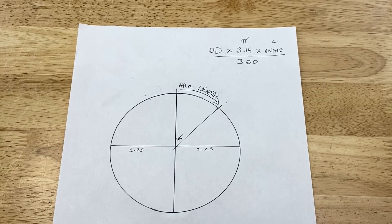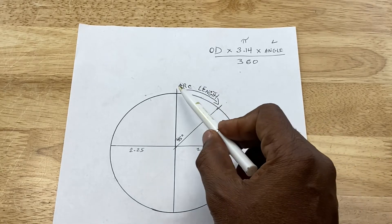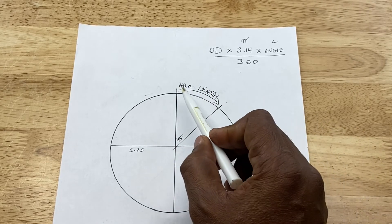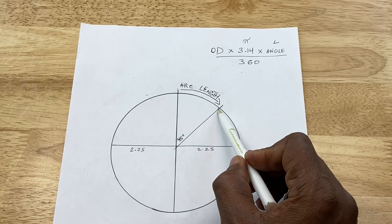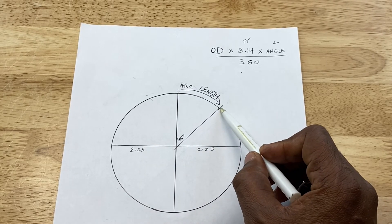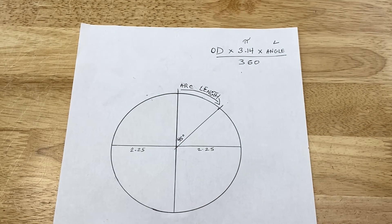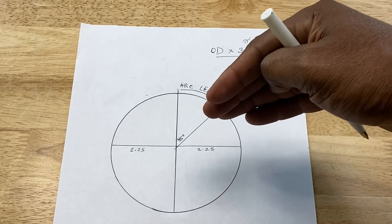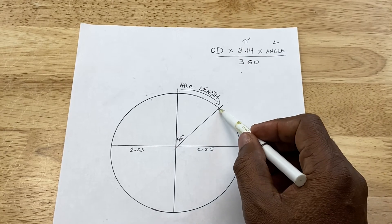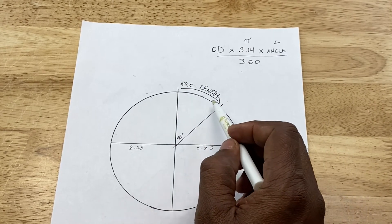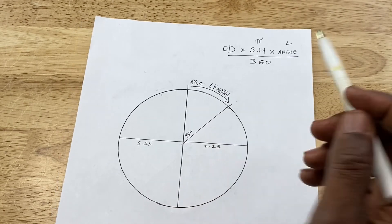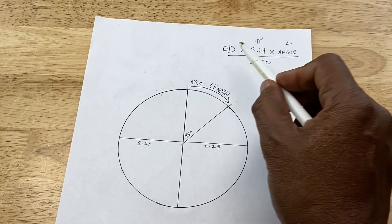Okay, so the next step is to figure out what our arc length is. So I wrote that there, arc length. And that's the distance from this point to this point. Because this point represents the center of where our nozzle or pipe will be inserted. So we have to have that center point there. So we have to know the distance from this point to this point. And how do we figure that out? Well, we have a formula here.